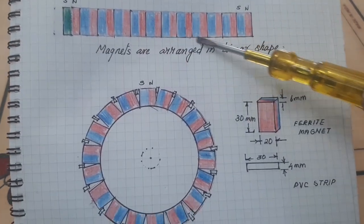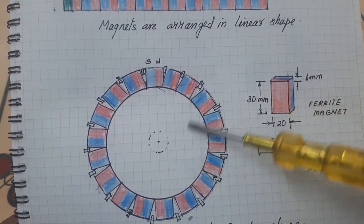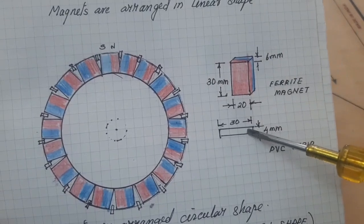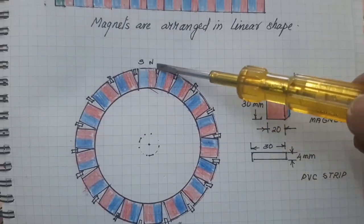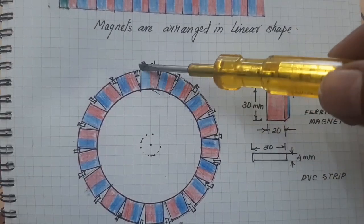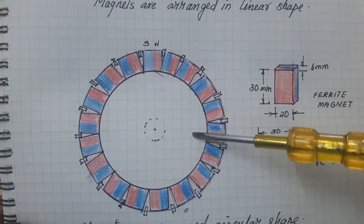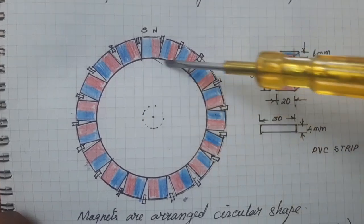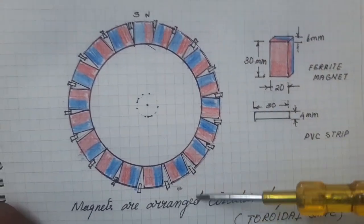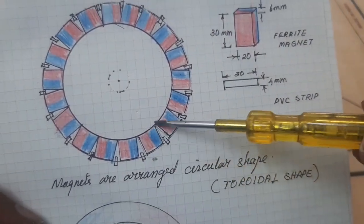The same magnets are arranged in a circular form by using a small PVC strip inserted outside the diameter so that it will form a circular shape. The circular forming of magnet is called toroidal magnets.